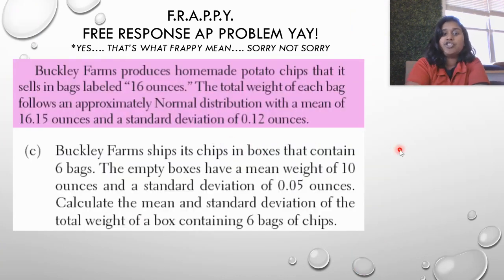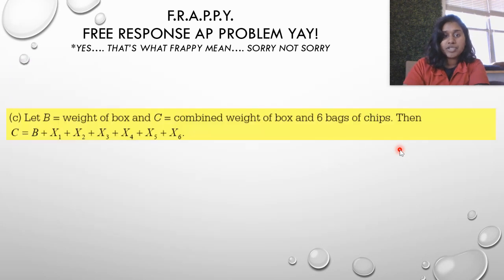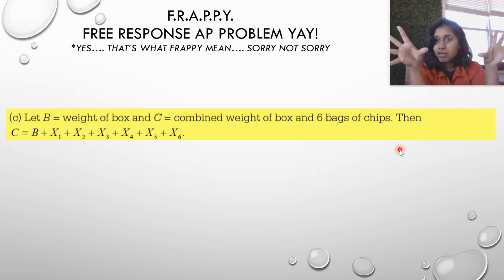Buckley Farms ships its chips in boxes that contain six bags. The empty box has a weight of 10 ounces and a standard deviation of 0.05 ounces. Calculate the mean and standard deviation of the total weight containing six bags of chips. The first thing I did is I let B be the weight of the box at 10 ounces, and C is the total weight, so everything, the box and the six bags of chips.